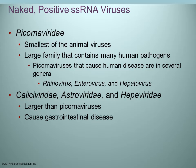This first family, the picornaviridae — sometimes pronounced pico RNA viruses — if you're familiar with the metric system, pico is a unit of measurement. There are a thousand pico units in a nano unit. That name tells you it's an RNA virus that is very, very small, and it is indeed the smallest of all the animal viruses. It contains several different human pathogens.